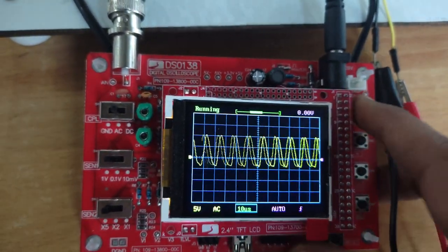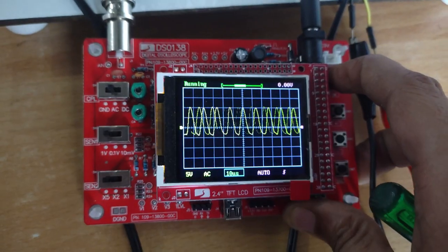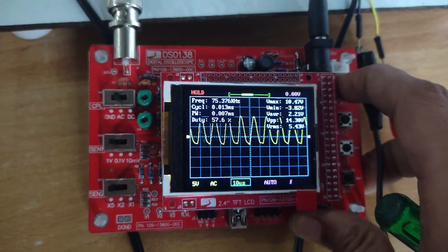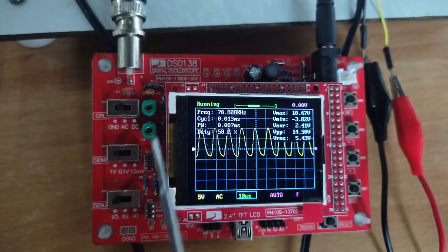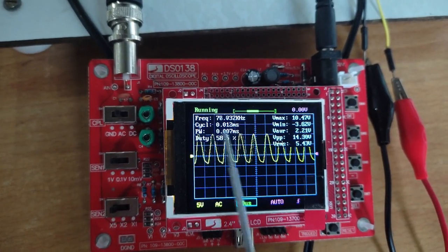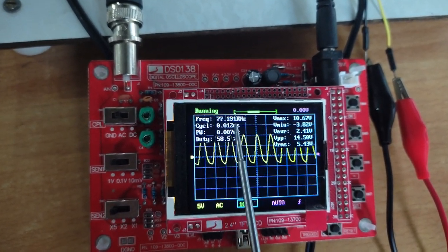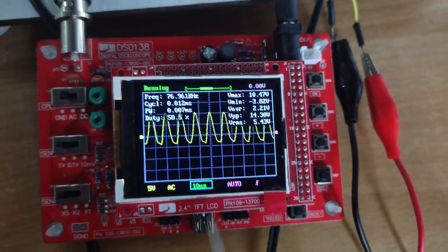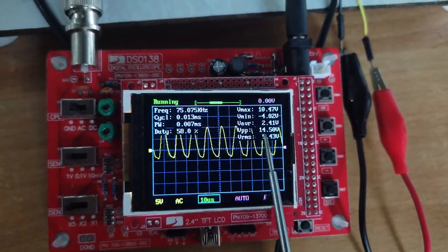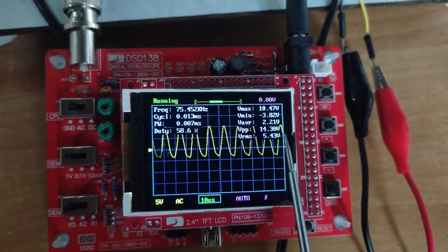Press this switch 4 of the oscilloscope. So you can see that oscillating frequency of this oscillator is around 75 kilohertz, and peak-to-peak voltage is 14.3 volts.